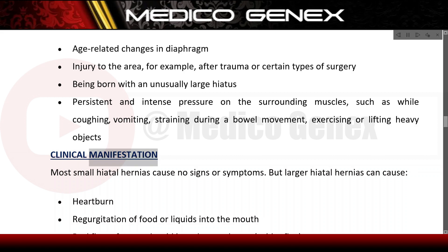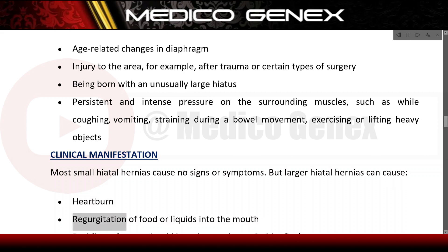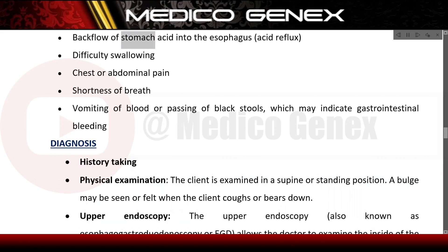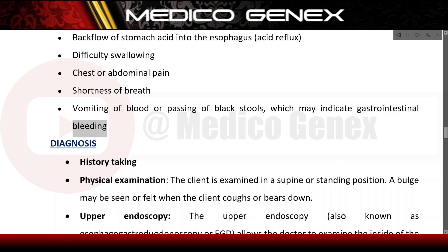Clinical manifestations. Most small hiatal hernias cause no signs or symptoms. However, larger hiatal hernias can cause heartburn, regurgitation of food or liquids into the mouth, backflow of stomach acid into the esophagus (acid reflux), difficulty swallowing, chest or abdominal pain, shortness of breath, and vomiting of blood or passing of black stools, which may indicate gastrointestinal bleeding.